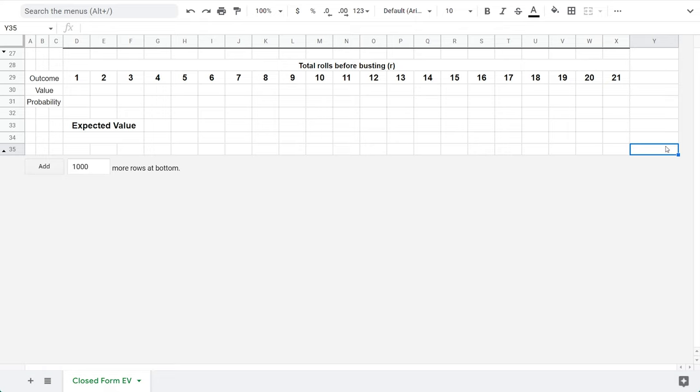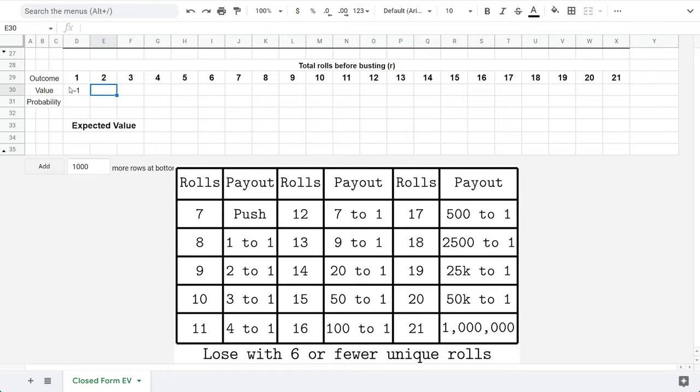To calculate expected value, I find it helpful to make a spreadsheet of all possible outcomes, the value of those outcomes, that is the amount won or lost, and the probability of those outcomes happening. An outcome in Pyramid Dice is how many unique rolls the player made before losing. That can be any whole number from 1 to 21. Note the 0 outcome is impossible because a player cannot lose on their first roll. The wager is lost for outcomes less than 7, which we indicate by putting negative 1 in those cells. The push at 7 means the player comes out even, so they earn 0. For 8 and up, we use the payout value, because that is how much the player gains from rolling that many unique rolls.